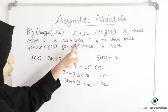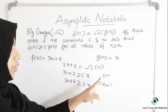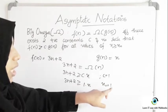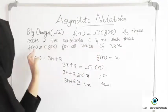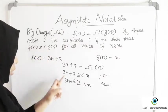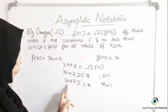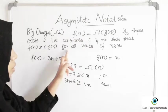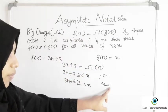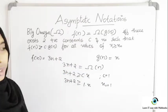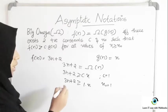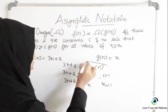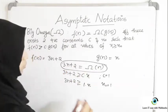There exist two positive constants C equals 1 and N0 equals 1, such that F of N is greater than C times G of N for all values of N greater than 1. So this inequality holds and I can say that 3N plus 2 is Big Omega of N.